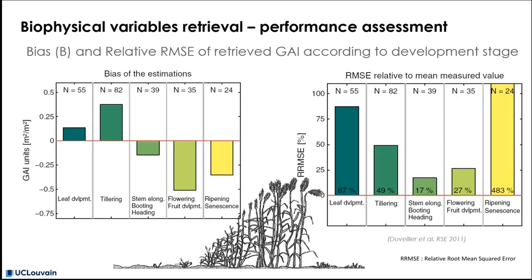Furthermore, the performance analysis can focus on the bias specifically, showing the overestimation for the early stages and the underestimation for the later stages. This analysis of the relative root mean square error is also very interesting. It demonstrates that the relative error is minimum during the key development stage from the stem elongation to the flowering and the grain filling. This is very important to know this kind of difference of error to make the best use of this biophysical variable estimation.